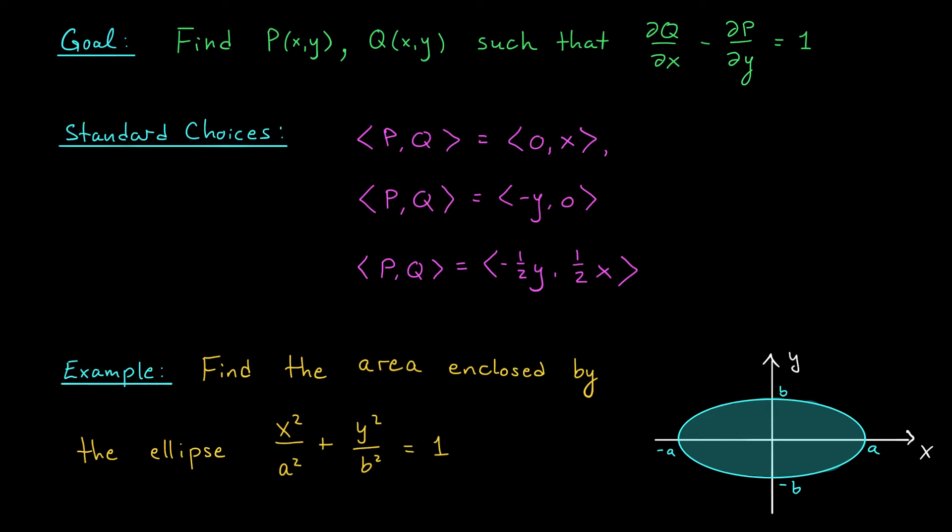Suppose that we want to find the area enclosed by the ellipse x²/a² + y²/b² = 1. This is the general equation of an ellipse in R² centered at the origin. It extends a units in the positive x direction and b units in the positive y direction. Now in one of our earlier videos, we actually found the area of this ellipse. It's πab. We obtain this by converting the ellipse to the unit circle using a change of variables and then integrating in polar coordinates. But this was a lot of work.